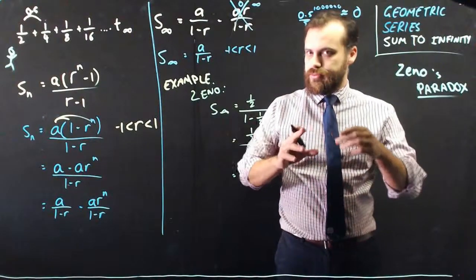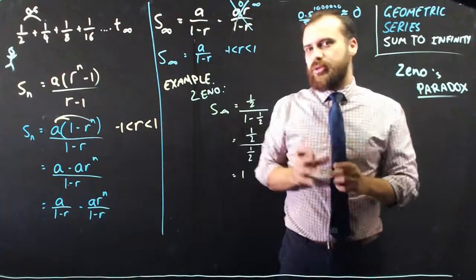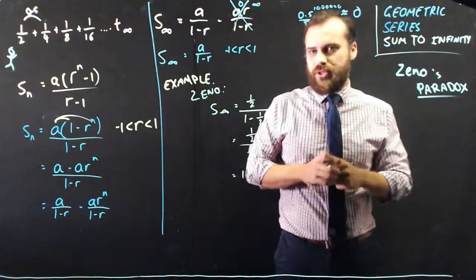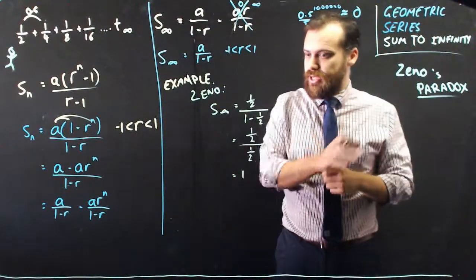So, Zeno thought that he couldn't go through an infinite number of points in a finite amount of time. It turns out that you can.